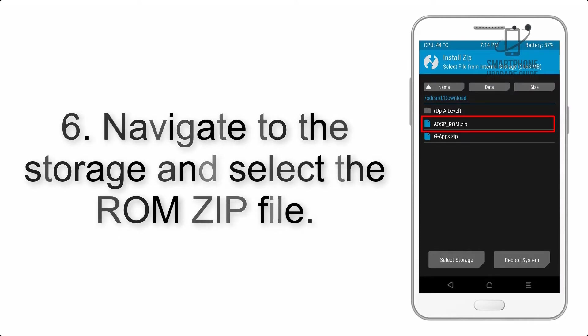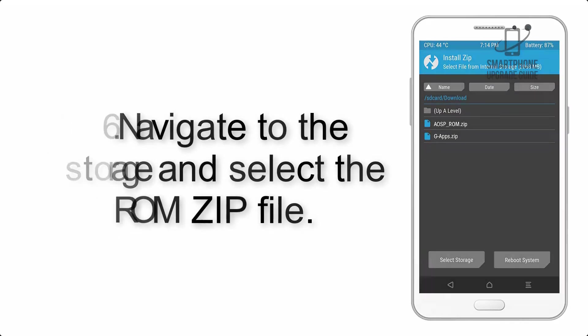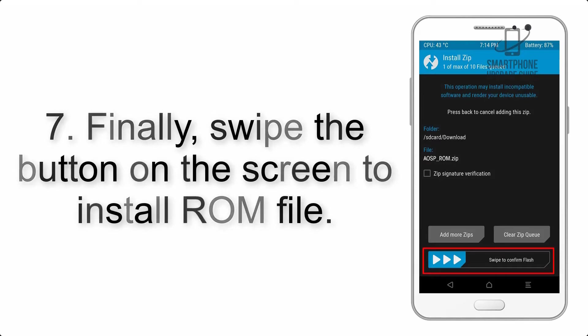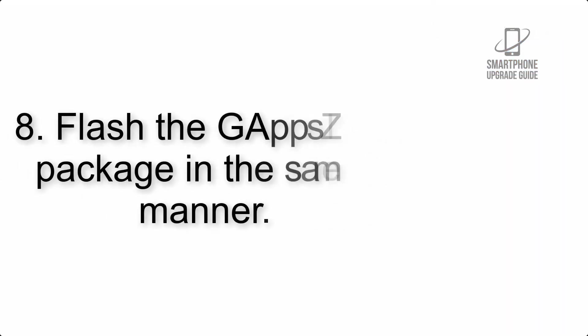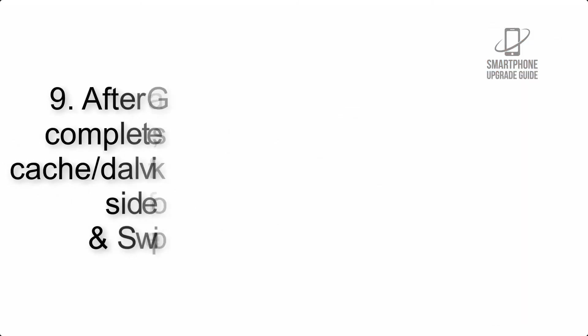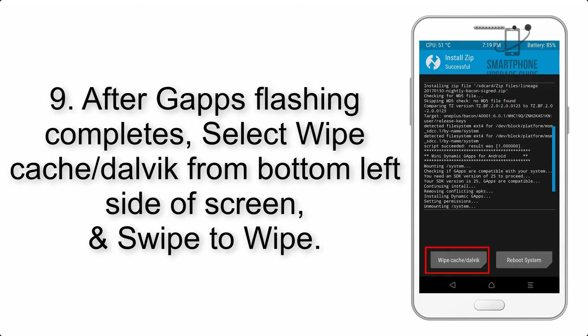Step 6: Navigate to the storage and select the ROM zip file. Step 7: Finally, swipe the button on the screen to install the ROM file. Step 8: Flash the GApps zip package in the same manner.